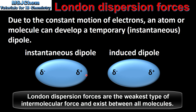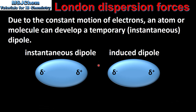A molecule with an instantaneous dipole can induce a dipole in another molecule, which is called an induced dipole. The combination of instantaneous dipoles and induced dipoles result in London dispersion forces between molecules.